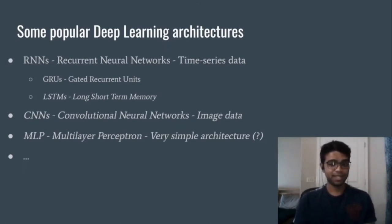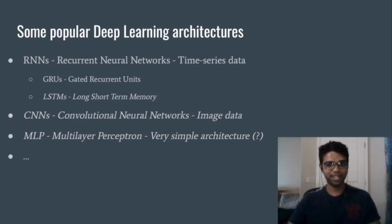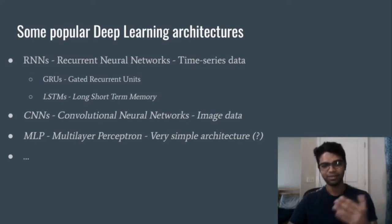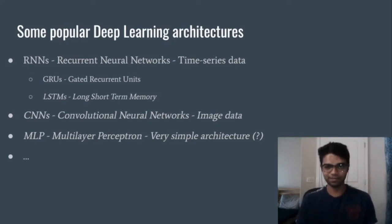Now let's talk about some famous deep learning or neural network architectures. The first hot topic nowadays are recurrent neural networks. These neural networks take time series data as input and give the next value — the value at time t+1, which is the next instant. Famous examples of such networks are GRUs and LSTMs. GRU stands for Gated Recurrent Units and LSTM stands for Long Short-Term Memory networks.